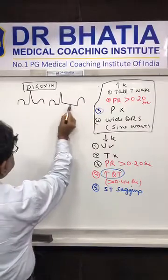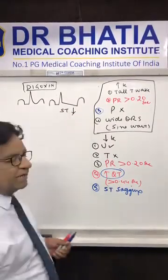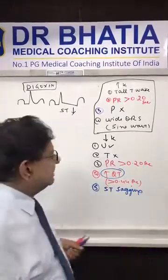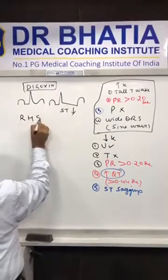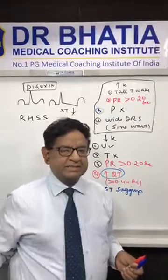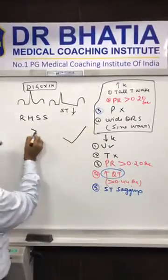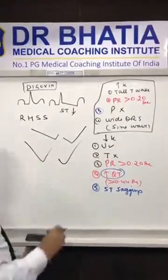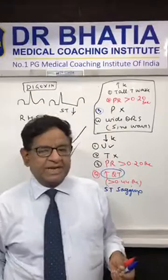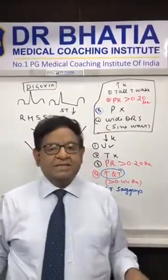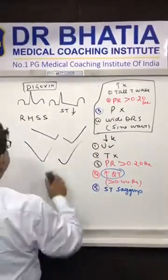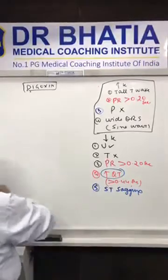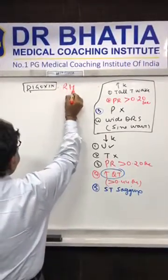When he comes after one month, he says he is perfectly alright — breathlessness and swelling are reduced. He has been adequately digitalized and got a lot of benefit. When I do his recording now, I get ST segment depression. From ages it has been called the reverse hockey stick sign — also known as the reverse check mark sign. So the entire digoxin effect is summarized in one word: reverse hockey stick sign.